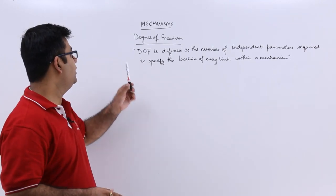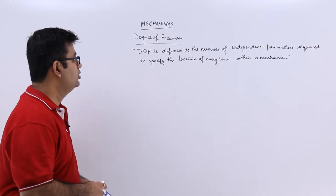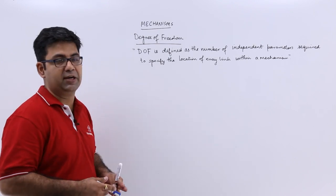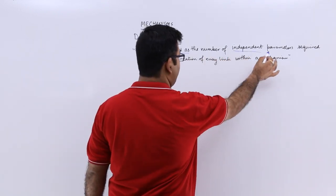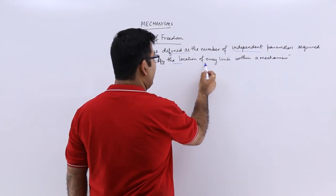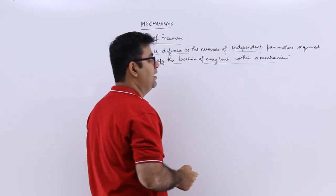Now let us talk about the degrees of freedom or DOF. It is also called the mobility of a mechanism. DOF is defined as the number of independent parameters required to specify the location of every link within a mechanism.